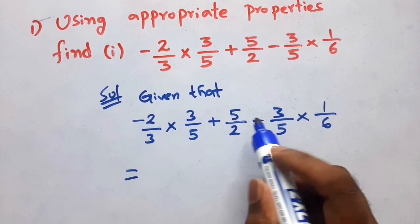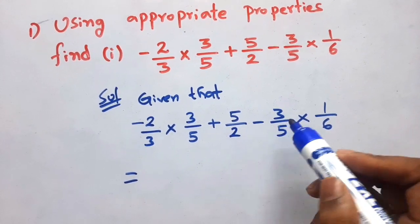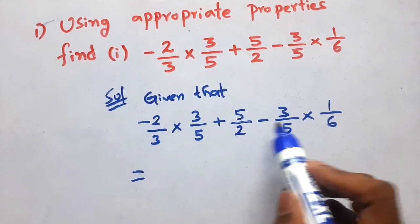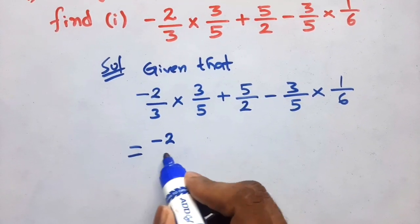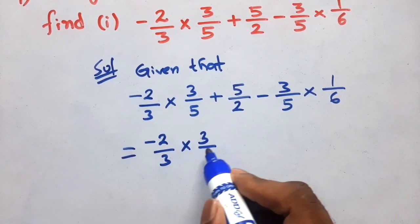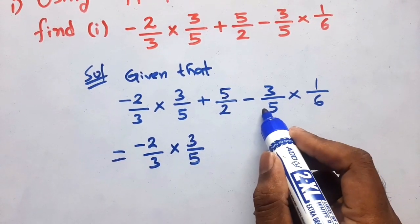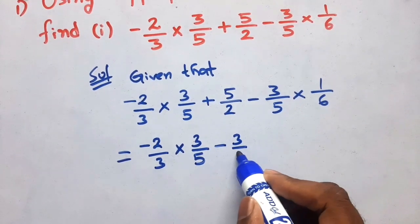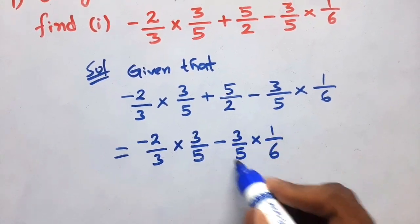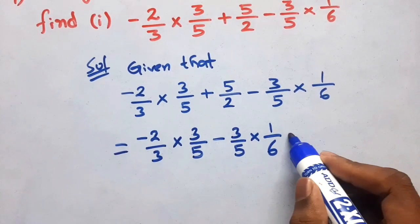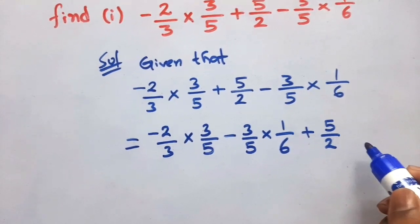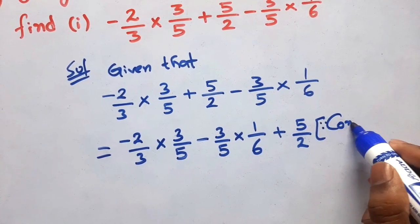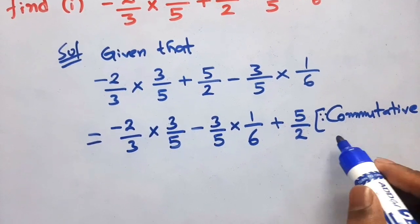Under subtraction: if this is a and this is b, then you can write b minus a, since a minus b gives b minus a. So I am writing minus 2 by 3 into 3 by 5. Applying a minus b equals b minus a, we write minus 3 by 5 into 1 by 6 first, then plus 5 by 2. Here we applied the commutative property under subtraction.